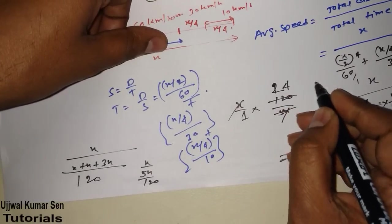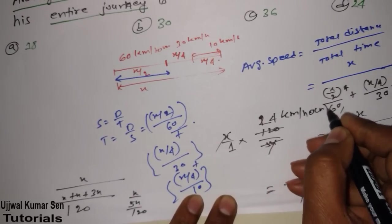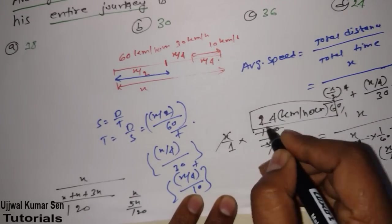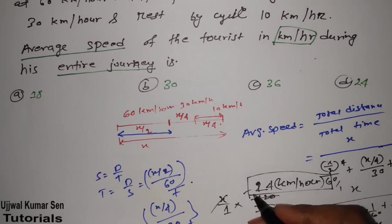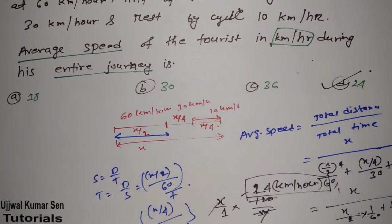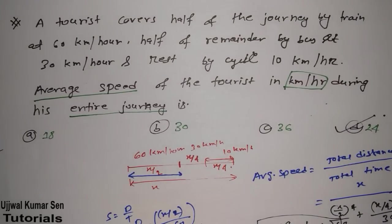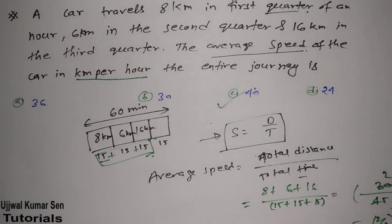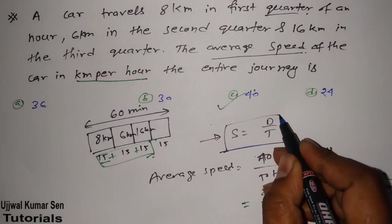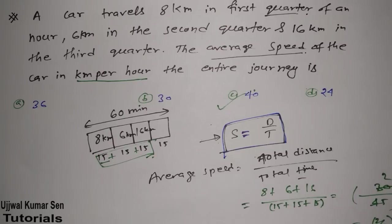So the average speed of the tourist for the entire journey is 24 kilometers per hour. As with the previous question, the core formula used is simply speed equals distance divided by time — nothing more than that.